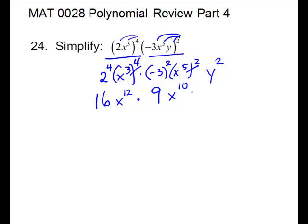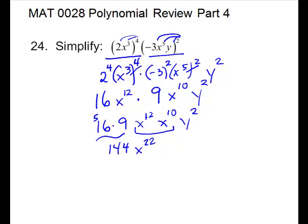Now you notice everything is straight across. We can rearrange it if we want to pull the numbers, the x's, and the y. Numbers are going to multiply, 144. For the variables, keep the base and add when they are straight across. And the y is already finished.